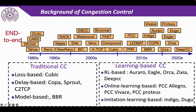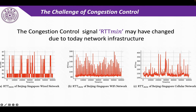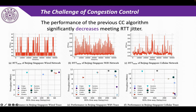So why do we need a new algorithm? The reason is that the congestion control signal minimum RTT has changed due to today's network infrastructure. The performance of previous CC algorithms significantly decreased when meeting RTT jitter.